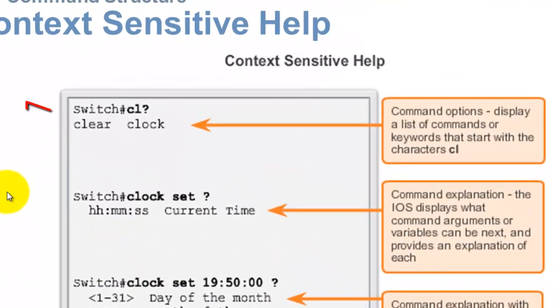Context sensitive help. If I type CL question mark, it's going to give me all commands that start with CL with anything behind it. Notice the question mark says whatever comes next will be fine with me. Here's another one: clock, space, set, space, question. If you don't know what comes after the word set, use this as a guide.